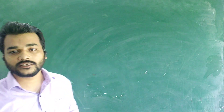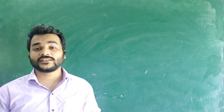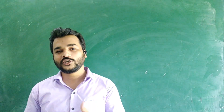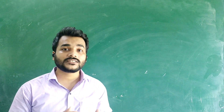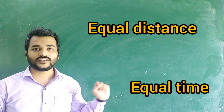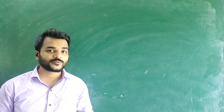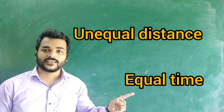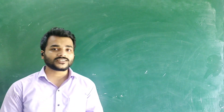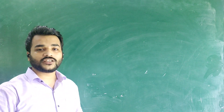The next question is: differentiate between uniform speed and non-uniform speed. Uniform speed is when a body travels equal distances in equal intervals of time. Non-uniform speed is when a body travels unequal distances in equal intervals of time. Remember these keywords and you will be able to understand everything.